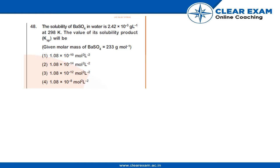The solubility of BaSO₄ in water is 2.42 × 10⁻³ grams per liter at 298 Kelvin. The value of solubility product Ksp will be: 1.08 × 10⁻¹⁰, or 1.08 × 10⁻¹⁴,